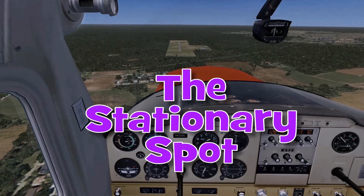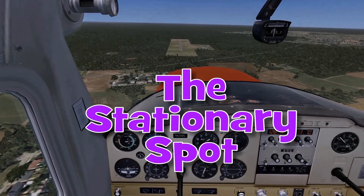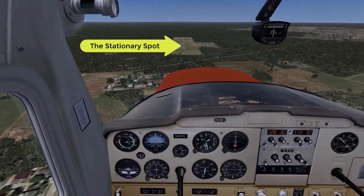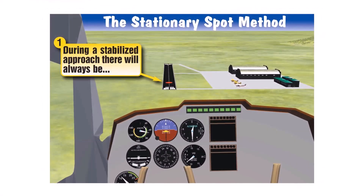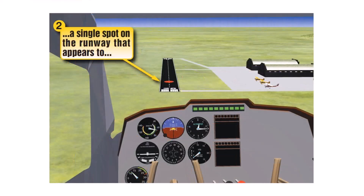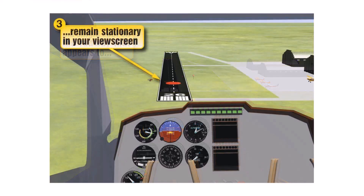How a stationary spot on the ground shows where you're headed. With the airplane trimmed for approach speed and the descent rate constant, as you look through your windscreen, there will always be one single spot on the ground directly ahead of you that doesn't appear to move. It's the spot where your airplane is headed, assuming that the glide path doesn't change. All objects on the surface positioned above the stationary spot — and thus beyond the point where the glide path intercepts the runway — appear to move up away from that stationary spot as you get closer.